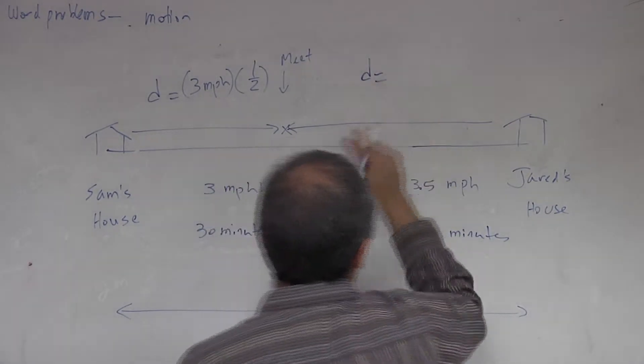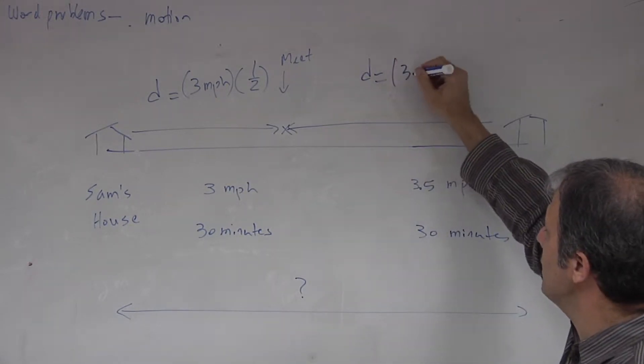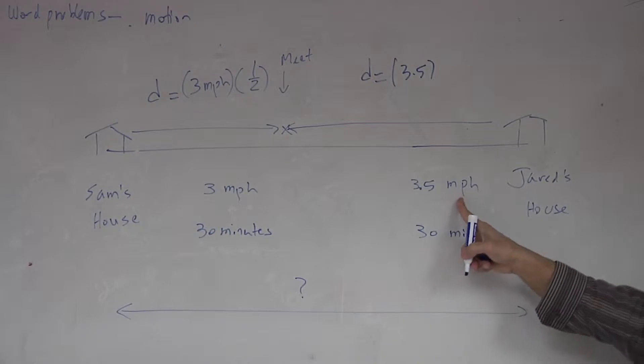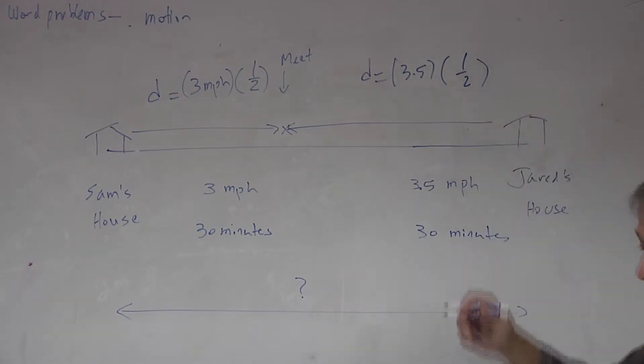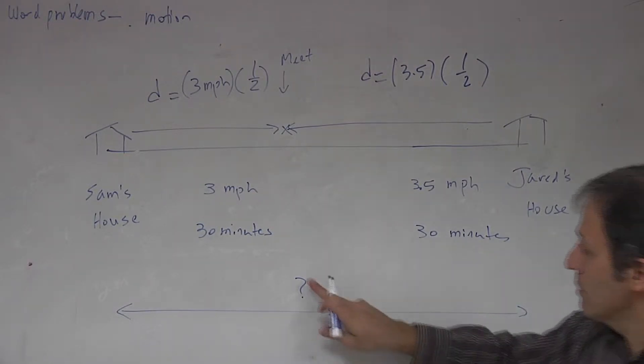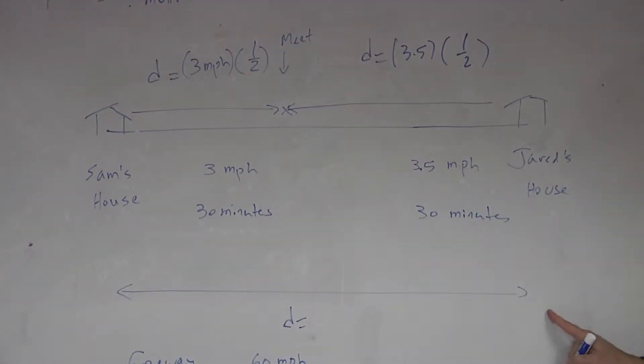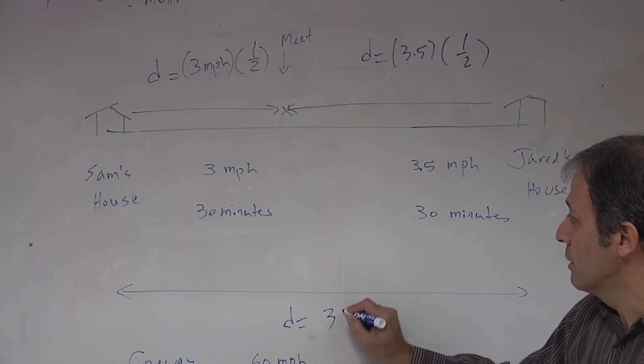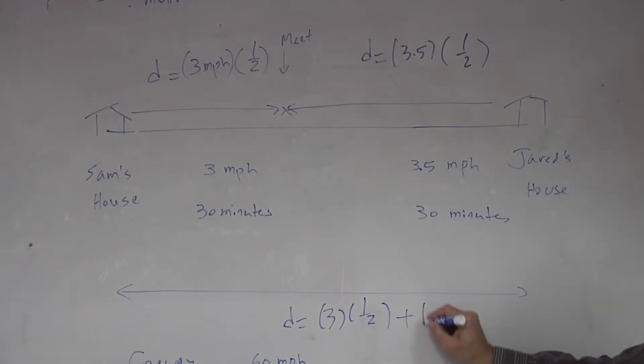We also need to calculate the distance from where Jared left his house to where he met Sam, so that's equal to three and a half, that's the speed of Jared's, times one half again because they both left at the same time. So the total distance D from Sam's house to Jared's house is equal to three times one half, that's the first one here, plus three and a half times one half again. So that's the total distance between the two homes.